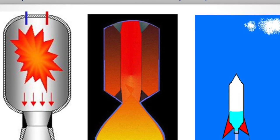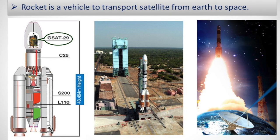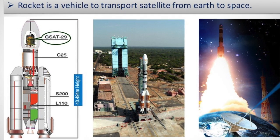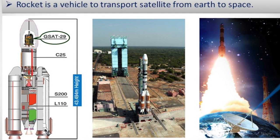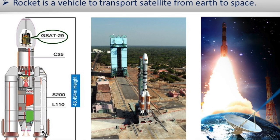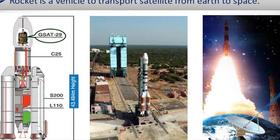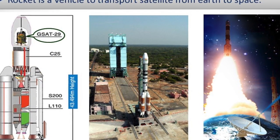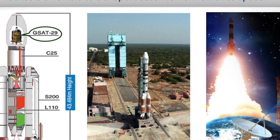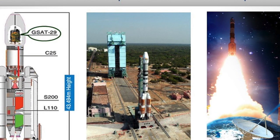Now we will look into the picture. There are three images. In the first image, the G-SAT satellite is assembled in the rocket. In the second image, the rocket is moving to the launch pad. In the third image, the rocket is flying to space for putting the satellite into orbit.